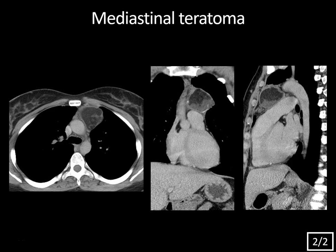This is a mediastinal teratoma — a germ cell neoplasm that usually has detectable fat, and may also have soft tissue, calcification, and occasionally fat-fluid levels. If you're lucky, you'll see formed teeth within them. Mature teratomas are the most common and are benign. Immature teratomas are more solid-looking and still have an excellent prognosis in children, but can have a malignant germ cell tumor component that needs further evaluation.